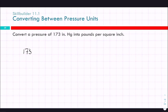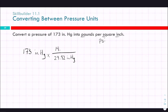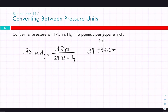For 173 inches of mercury converted to psi, pounds per square inch, we use 29.92 inches of mercury equals 14.7 psi. So 173 times 14.7 divided by 29.92 gives us 85.0 psi.